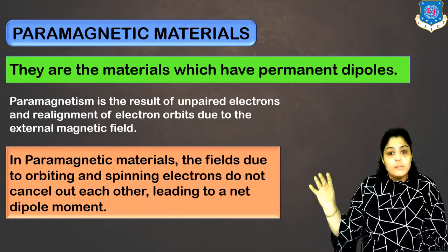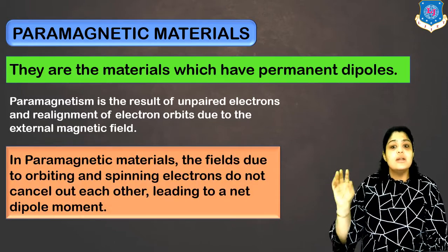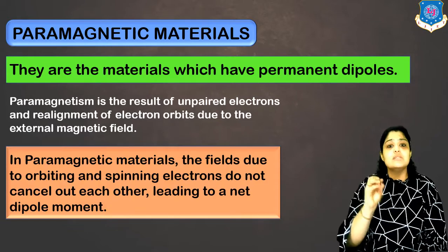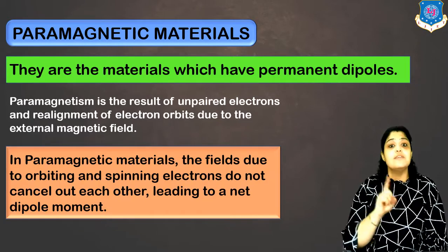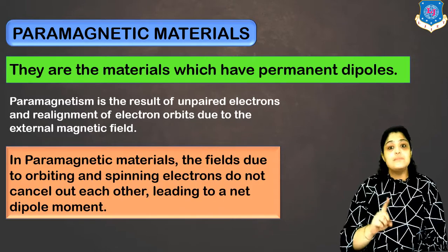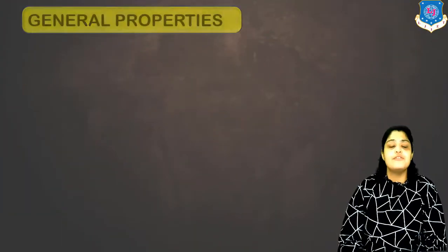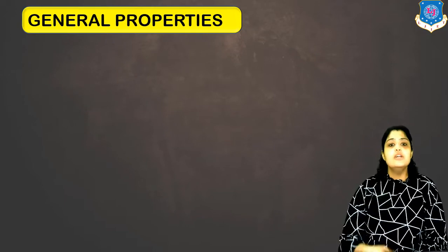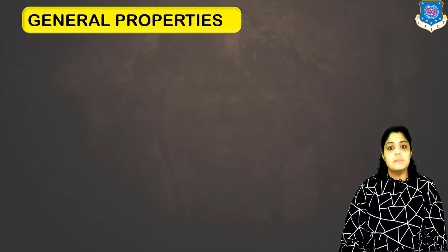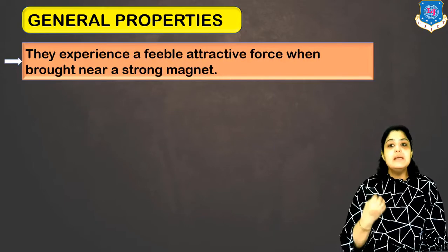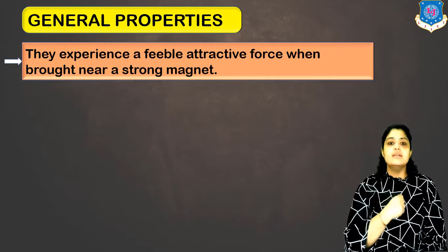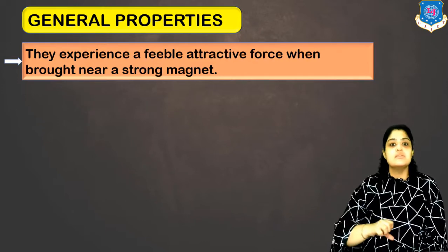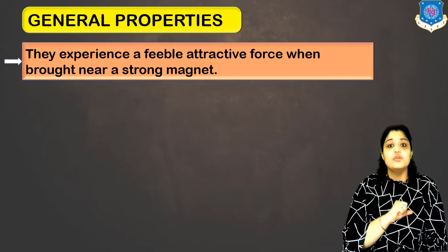Due to the orbiting and spinning electrons, they do not cancel out each other when magnetic field is applied, leading to a small dipole moment when magnetic field is present. In the absence of field, they do not have any net dipole moment. They experience a weak attractive force when brought near a strong magnet.